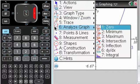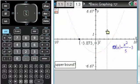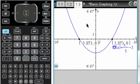Menu, analyze graph, zero. To the left, and to the right. And that's about what I wanted to do.